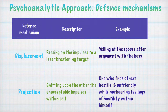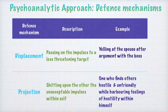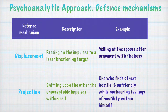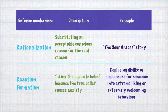Projection implies shifting onto others the unacceptable impulses within oneself. The negative impulses or feelings which we find difficult to accept within ourselves at a conscious level — using projection, we shift those negative parts within us onto someone else. For example, a person who generally finds others as hostile and unfriendly, while actually harboring feelings of hostility within himself for others, might be using the defense mechanism of projection.